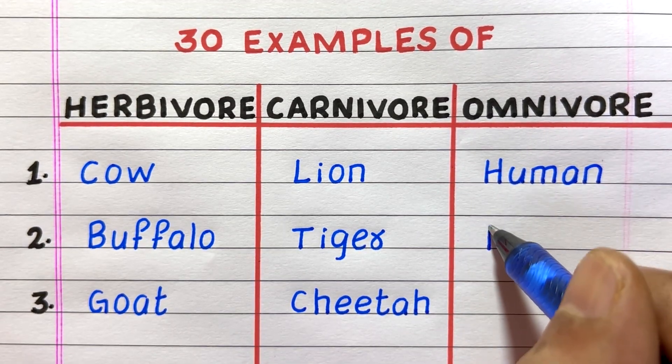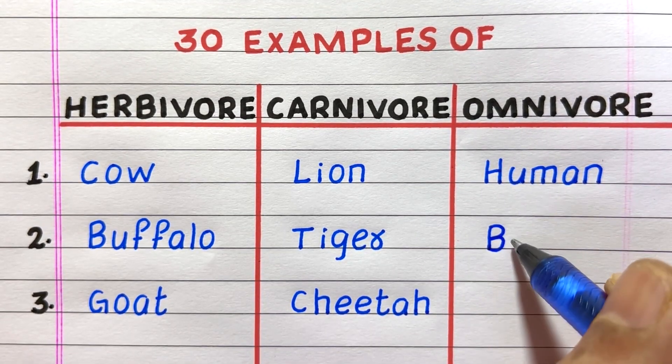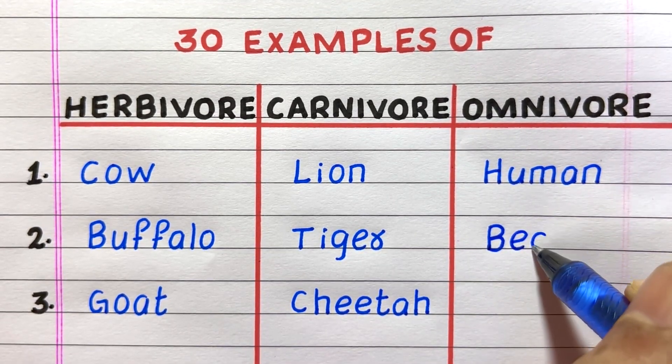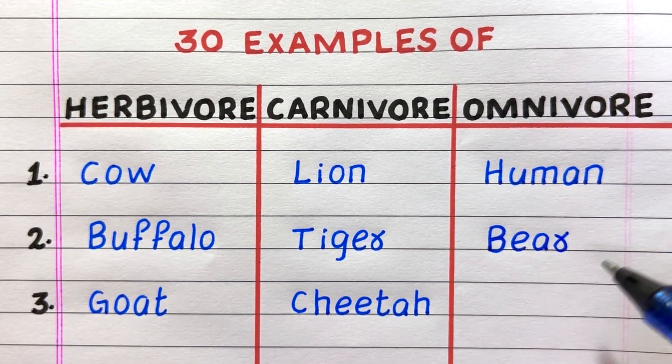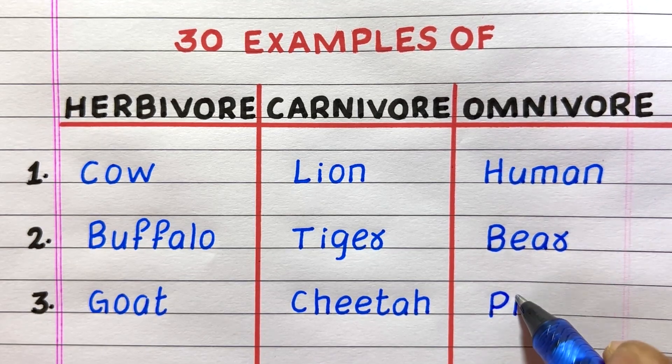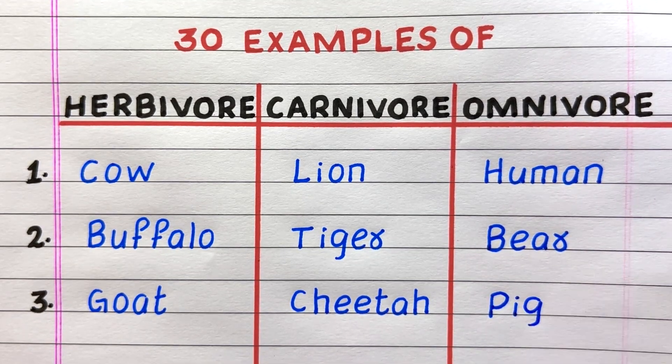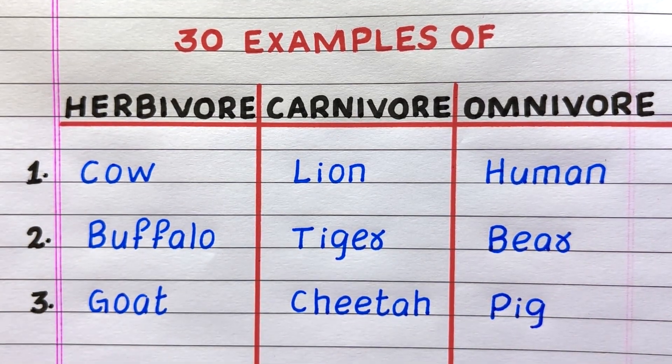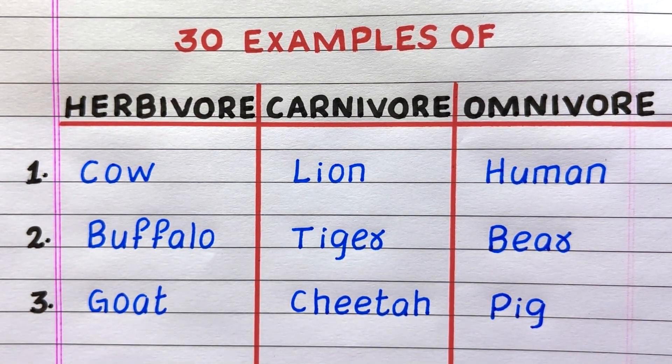First example of an omnivore is human, second bear, third pig.